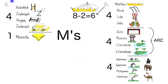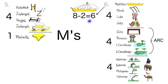To connect Section 5 with Section 6, think of the M's. Section 5 ends with the M in Malachi, and Section 6 starts with the M's in Matthew and Mark. Also, Section 6 begins with Matthew, which has 28 chapters, and 8 minus 2 equals 6 for Section 6.